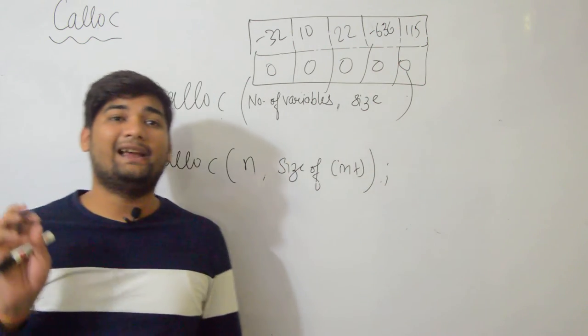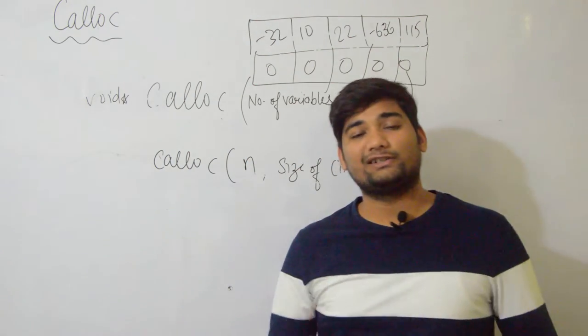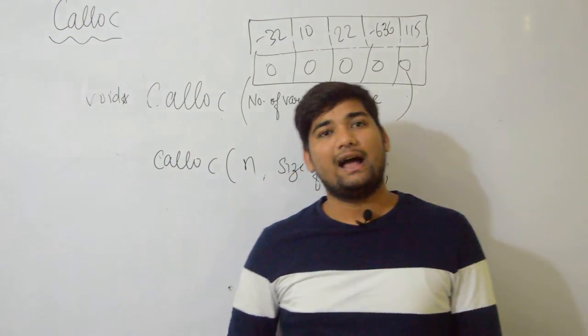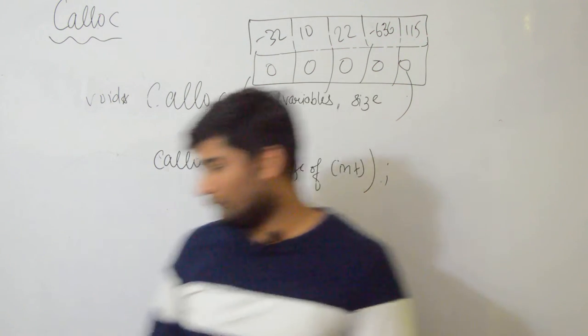Second difference: malloc always initializes the values with garbage while calloc initializes them with zero. Do you understand calloc function? Okay, let me explain realloc function to you.